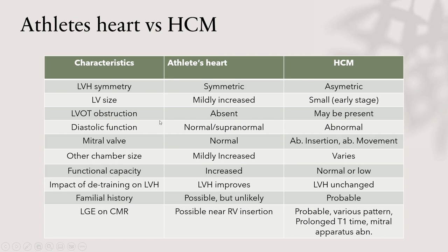To increase pre-test probability when evaluating athlete's heart versus HCM, you must consider hours of exercise per week, duration of training, age, race — African-Americans have an increased left ventricular hypertrophic response to exercise — and family history of HCM. When performing imaging, ethnicity-specific cutoffs are recommended, especially for Black athletes compared to Caucasian athletes, because of their stronger hypertrophic response to exercise.